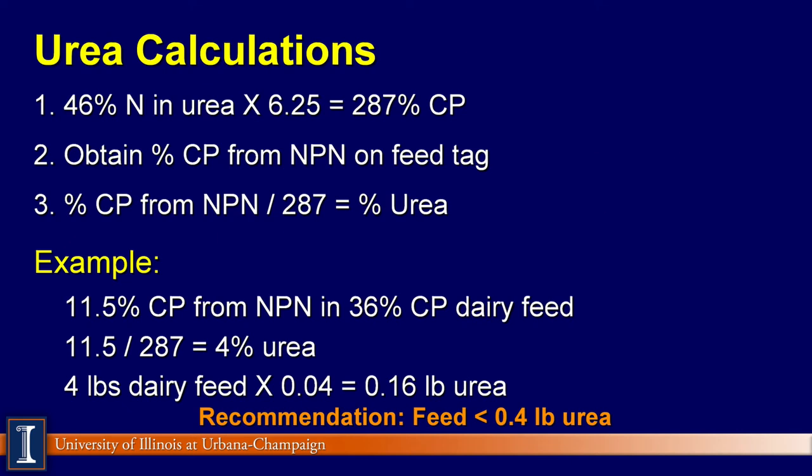This slide shows how to calculate the non-protein nitrogen content of a dairy feed when the non-protein nitrogen is supplied as urea. Urea contains 46% nitrogen. The constant to convert nitrogen to crude protein is 6.25. Therefore, to convert nitrogen in urea to crude protein, multiply the 46% nitrogen by 6.25.